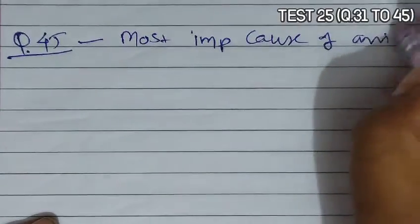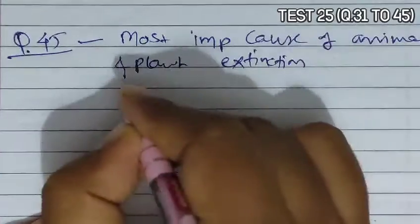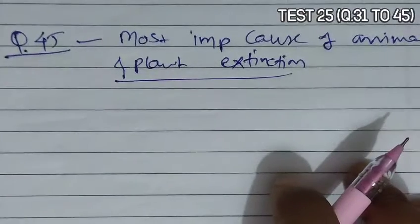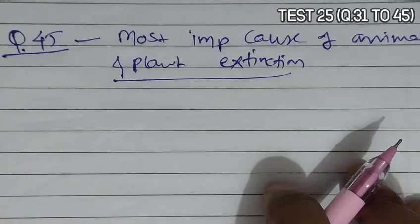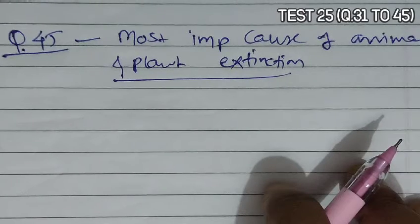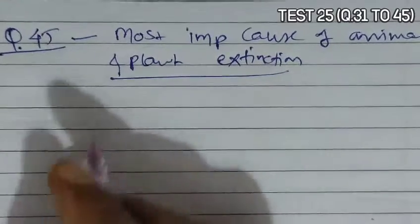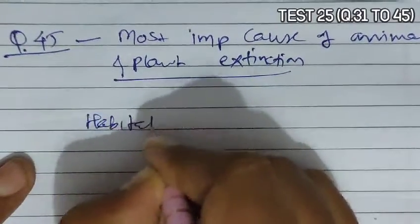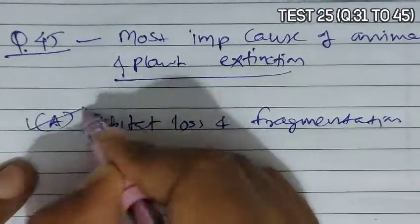Question 45 asks about the most significant cause of animal and plant extinction. The main cause of loss of biodiversity is destruction of natural habitat. Overpopulation, urbanization, and industrialization lead to the destruction or fragmentation of natural habitats to fulfill requirements of additional land. Loss of habitat results in annihilation of plants and microbes, and forces out animals which die in alien lands. So habitat loss and fragmentation is the main cause, and A is the correct answer.